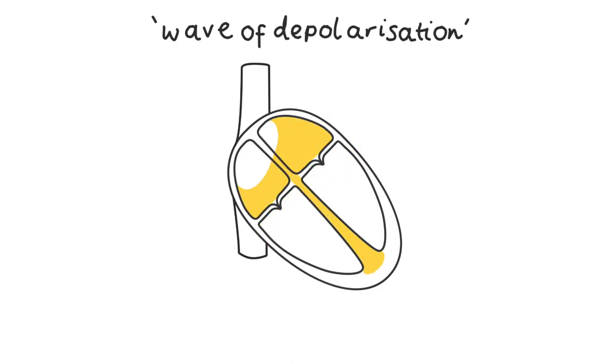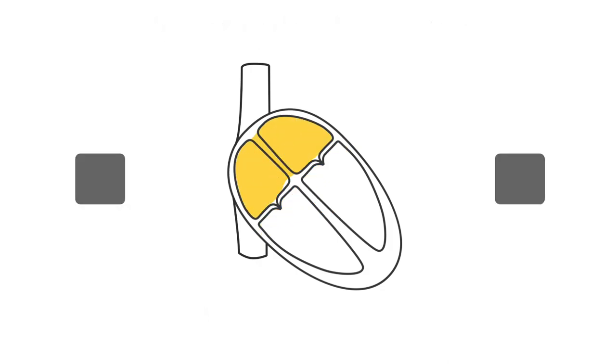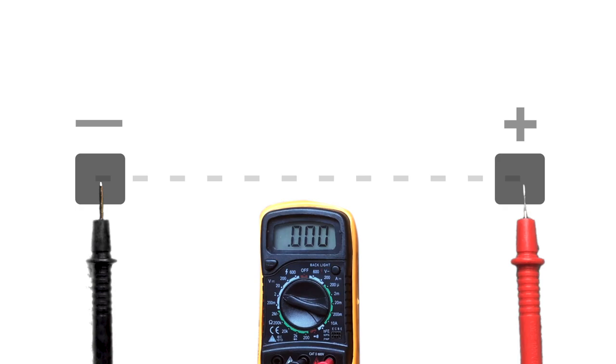For our purposes today, it's useful to think of this wave as analogous to the concept of current, electrical current, because it's essentially electrical energy or more specifically electrochemical energy that is moving in particular directions. Now if I was to say we put a piece of metal here and another one here, then we can actually measure the current which is travelling between these two points. It's like using a voltmeter, measuring the voltage in a circuit.